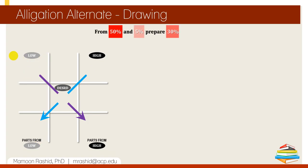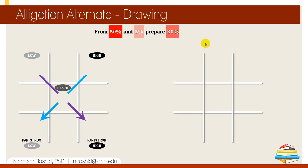Here's an example: we have a stock of 50% and 5%, and we need to make 30%. This 30 is between these two — it is lower than 50 and higher than 5. We draw the allegation chart and put the low concentration 5 in the top left corner, the high concentration 50 in the top right corner, and at the center the desired concentration of 30.